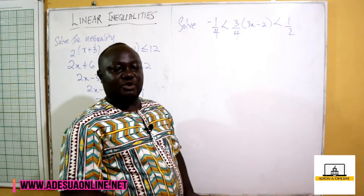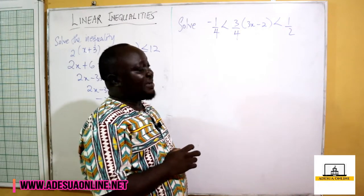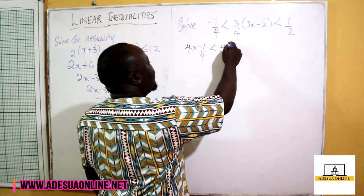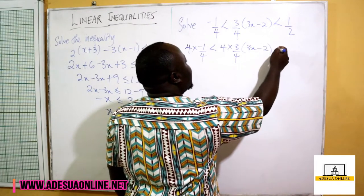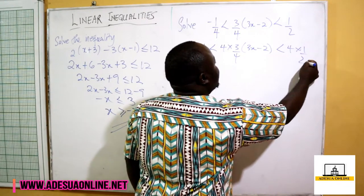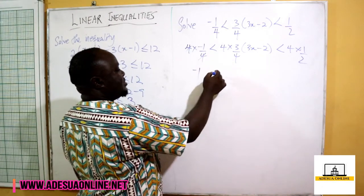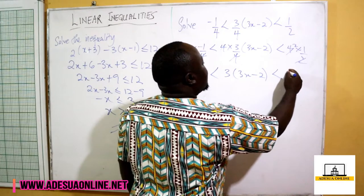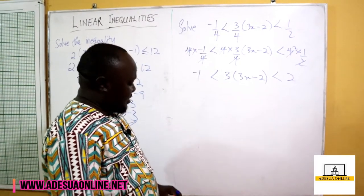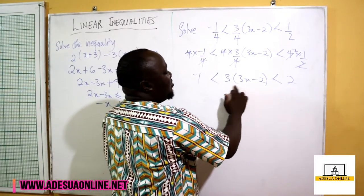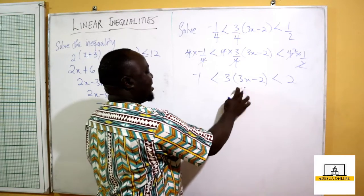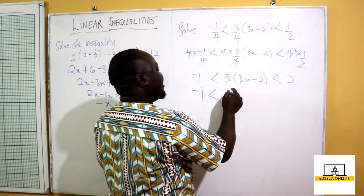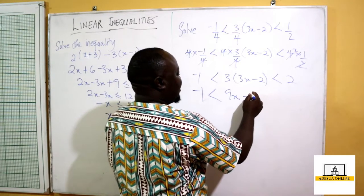We multiply through the whole inequality by 4. We have 4 times negative 1/4, then 4 times 3/4 into 3x minus 2, then less than 4 times 1/2. Four over four gives negative 1, four over four gives 3 into 3x minus 2, and 4 over 2 gives 2. Expanding the middle term: negative 1 is less than 9x minus 6, which is less than 2.